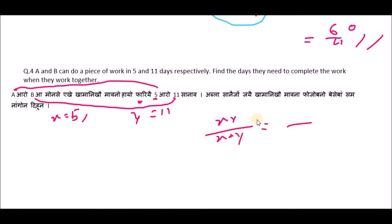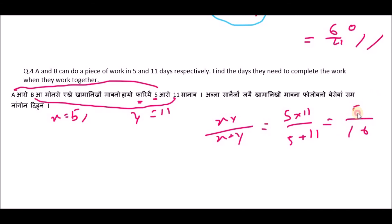5 plus 11 is equal to 16, and 5 into 11 is 55. So the answer is 55 divided by 16 days.